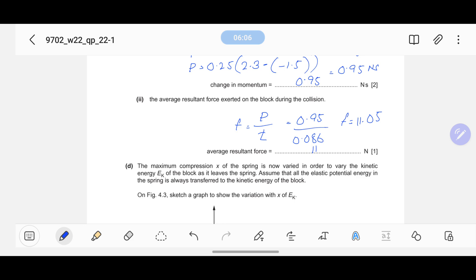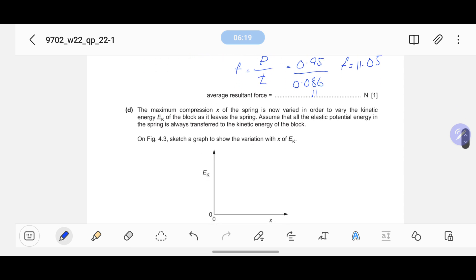Part D: The maximum compression x of the spring is now varied in order to vary the kinetic energy Ek of the block as it leaves the spring. Assume that all elastic potential energy in the spring is always transferred to the kinetic energy of the block. Sketch a graph to show the variation of Ek with x.